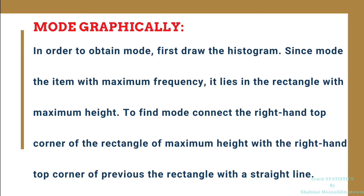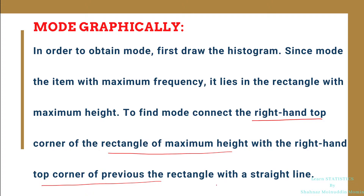To find mode, connect the right-hand top corner of the rectangle of maximum height with the top right corner of the previous rectangle with a straight line. We first draw the histogram and search for the rectangle with maximum height, then connect the right-hand top corner of that rectangle with the right-hand top corner of the previous rectangle using a straight line.